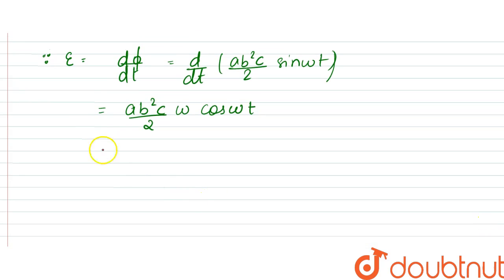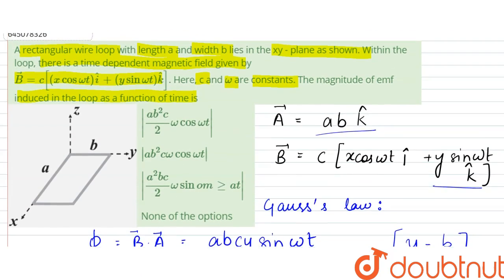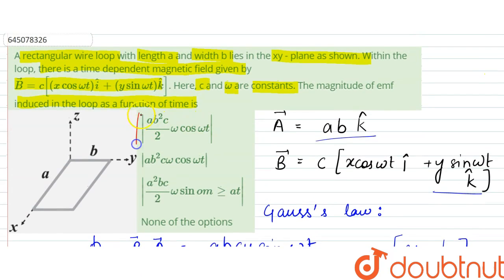So magnitude wise, epsilon magnitude would be equal to this. We can write AB squared C by 2 omega cos omega t. That is, option A is the correct answer.